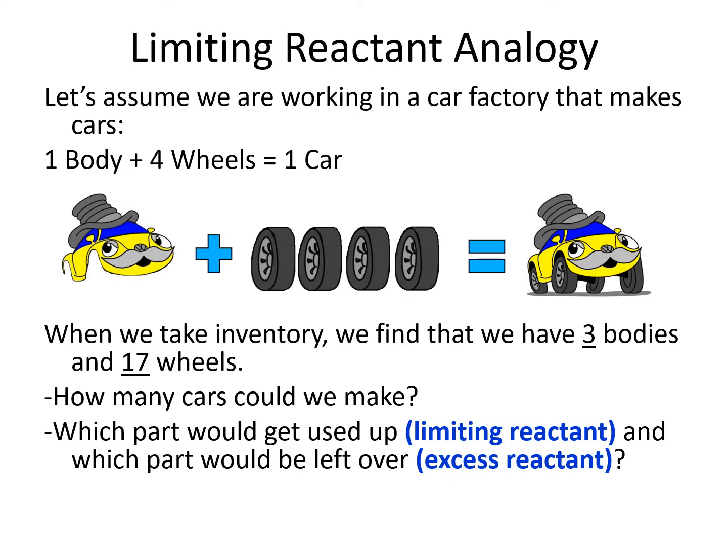Let's look at another analogy. Let's say we're working in a simple car factory that makes cars out of just two things: a car body and wheels. One car body plus four wheels makes a car. Let's say we take inventory at our factory and find that we have three car bodies and 17 wheels. The question is, how many cars could we make?